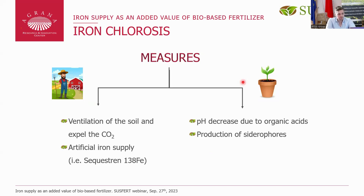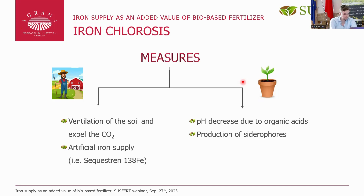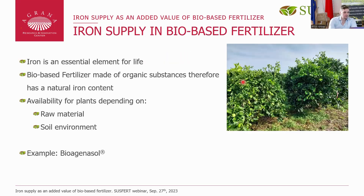What does the plant do in nature? It decreases the pH around its root network by expulsion of organic acids. Of course, there are some specific plants which can do that very well. This relates to bio-based fertilizers because iron is an essential element of life, and bio-based fertilizers are made out of organic substances that therefore have a natural iron content, even if only in trace amounts.